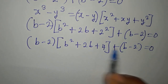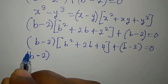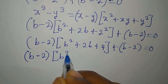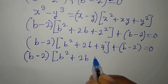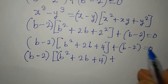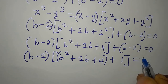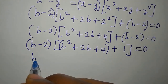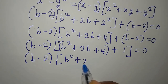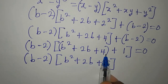What is common to both terms is B minus 2, so B minus 2 comes out as a factor. Inside the remaining bracket we have B squared plus 2B plus 4, plus the second group divided by B minus 2 which gives 1. Adding 4 and 1, we get B minus 2 times B squared plus 2B plus 5, equals 0.